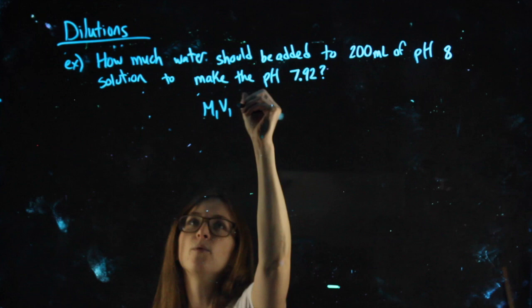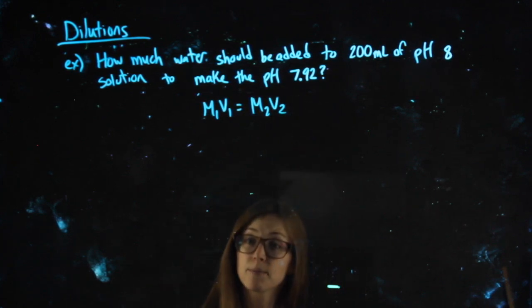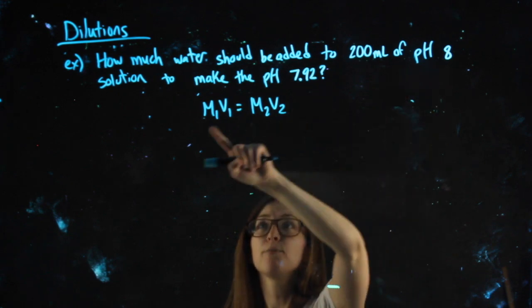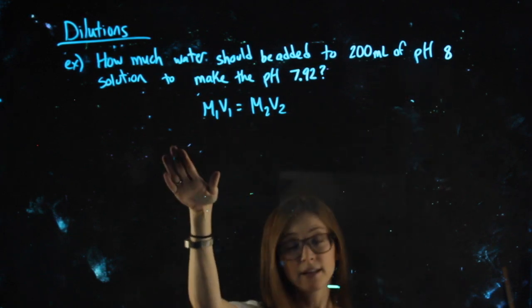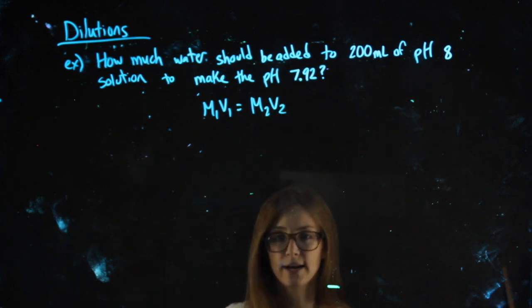I'm going to use M1V1 equals M2V2. Now, big mistake people normally make, they just end up plugging pHs in. Nothing in this formula says pH. So I can't plug 8 and 7.92 in.